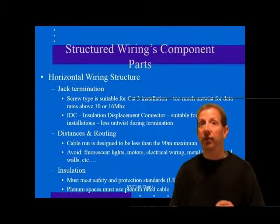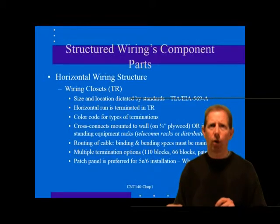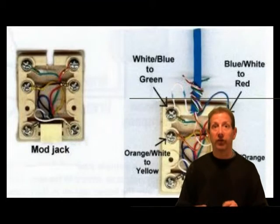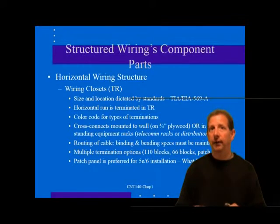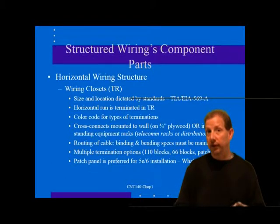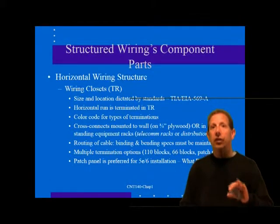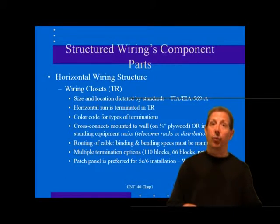Horizontal wiring is specified according to the performance categories defined in 568C. Both cable and connecting hardware must meet performance guidelines appropriate for their use. One factor affecting performance in outlet jacks is the method of wire termination. Screw terminations were acceptable in Category 3 installations but are prohibited in Cat 5e or Cat 6 installations because of performance constraints. Cat 3 is adequate for 10 or 16 MHz bandwidth networks, Cat 4 for 20 MHz, and Cat 5e for 100 MHz.